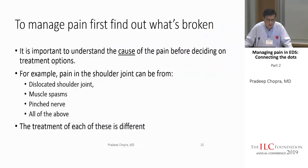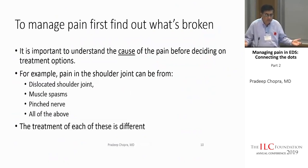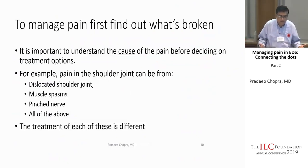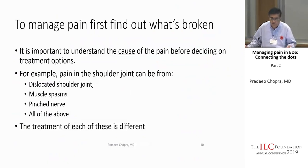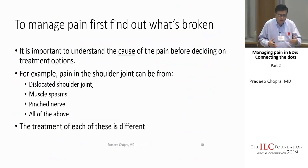The first principle of pain management is to treat what's broken — find out what's broken and fix it. Everything else is a bandaid. For example, if someone has pain from the shoulder joint, it could be a dislocated shoulder, muscle spasms, a pinched nerve, or all of them. The treatment would involve addressing one or all of these causes.